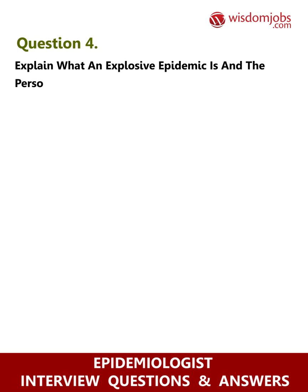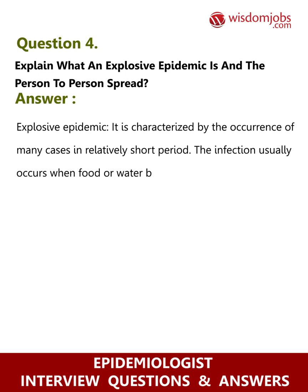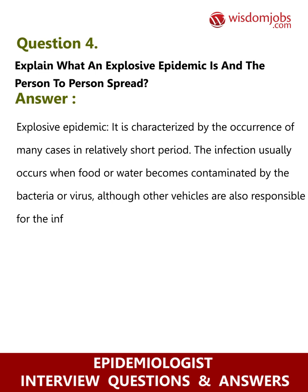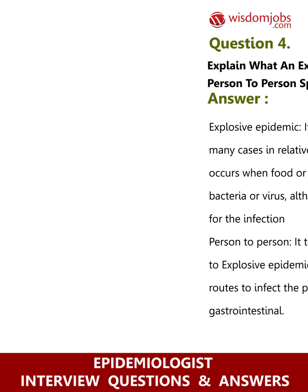Question 4: Explain what an explosive epidemic is and person-to-person spread. Answer: An explosive epidemic is characterized by the occurrence of many cases in a relatively short period. The infection usually occurs when food or water becomes contaminated by bacteria or virus, although other vehicles are also responsible. Person-to-person spread takes a longer period to infect compared to explosive epidemic, and the infective agent takes different routes such as respiratory or gastrointestinal.